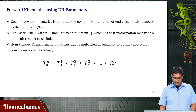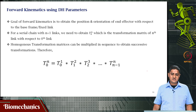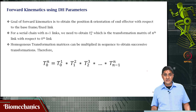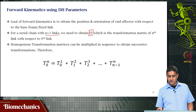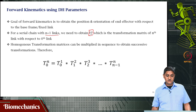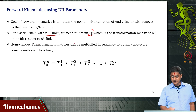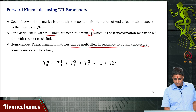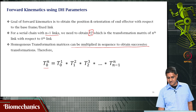Forward kinematics is used to find the position and orientation of the end effector. We are interested in knowing the end point coordinates — the position and orientation of the end effector with respect to the base, with respect to the fixed link. If there is a serial chain with n+1 links, we need to find T(0→n), the transformation of the nth link with respect to the 0th link, which requires many matrix multiplications. Homogeneous transformation matrices are multiplied in sequence to obtain the overall transformation.